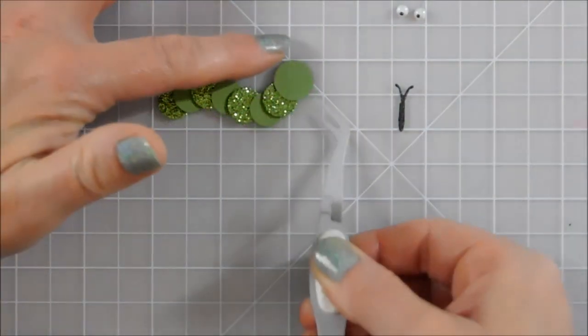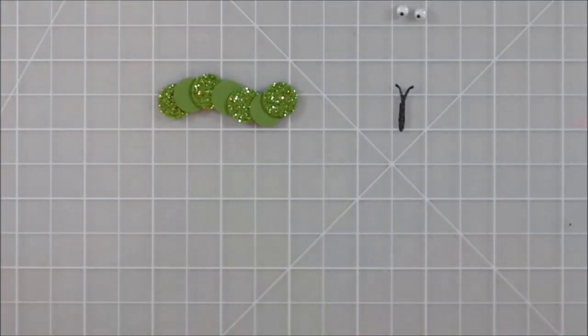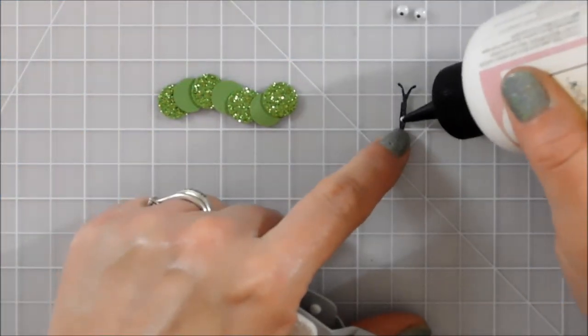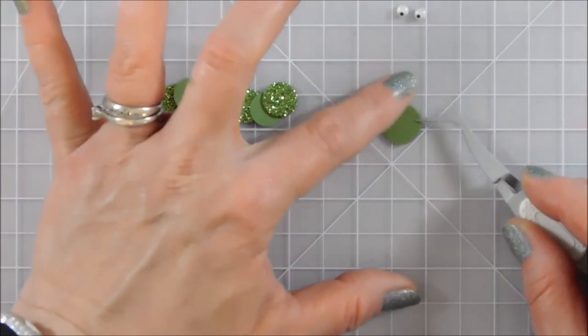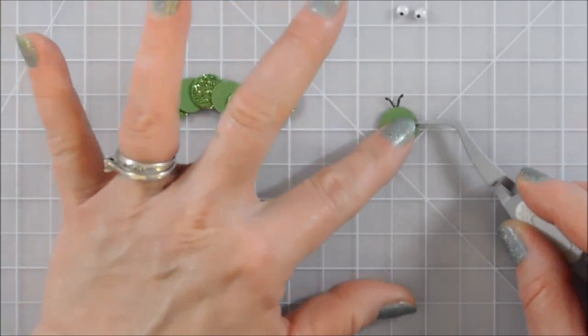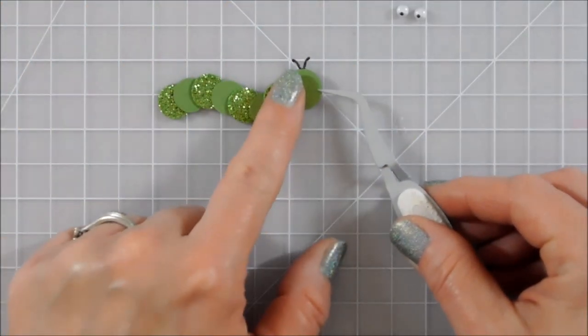But the first thing I want to do before I glue it all together is just put the antenna on the back of the head piece. That way I know that I'm getting those positioned the way I want as well.